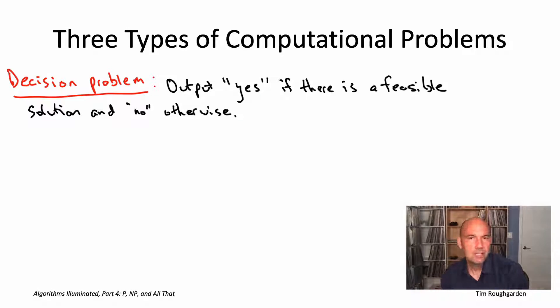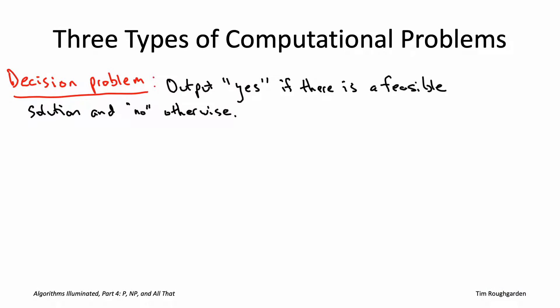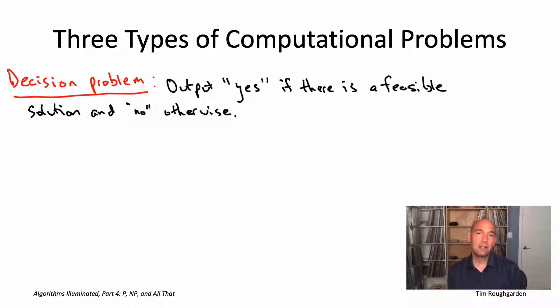Decision problems are convenient when developing computational complexity theory, but in real applications, they're the rarest of the three. Usually in applications, you actually want a feasible solution, not just to know that one exists.